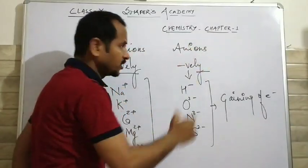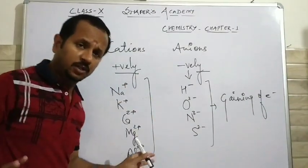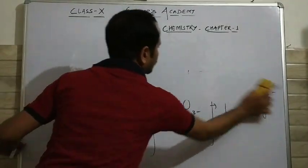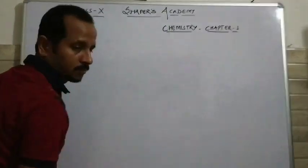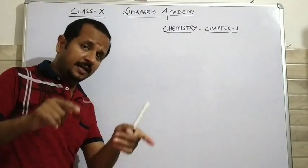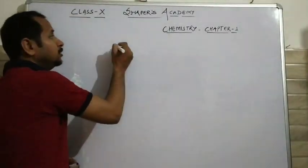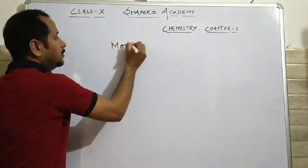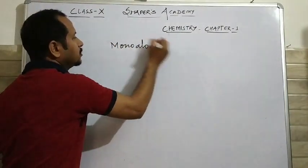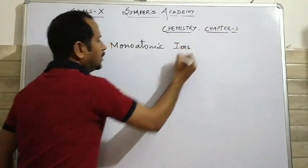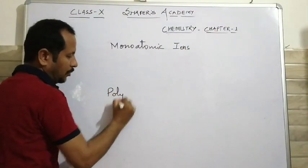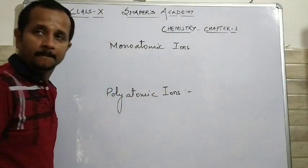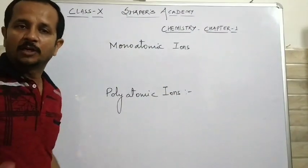You have studied 2 types of ions: cations and anions. Cations are positively charged ions and anions are negatively charged ions. But in your standard 9th on page number 37 you found 2 more categories of ions: monoatomic ions and polyatomic ions.